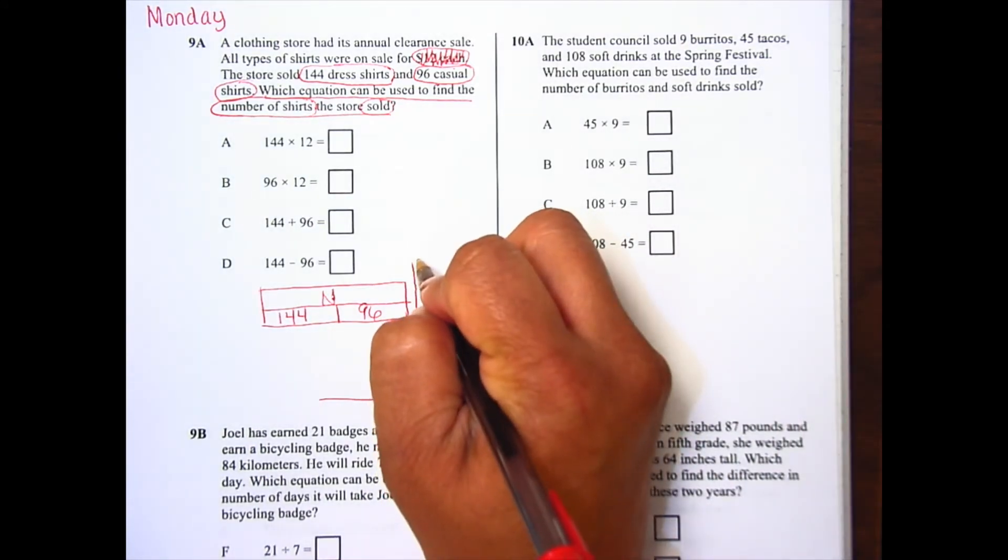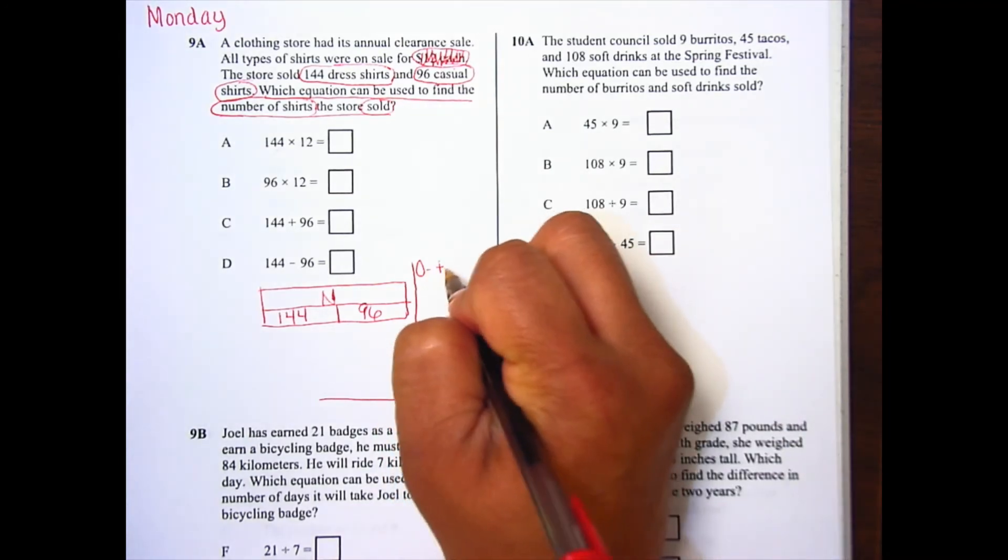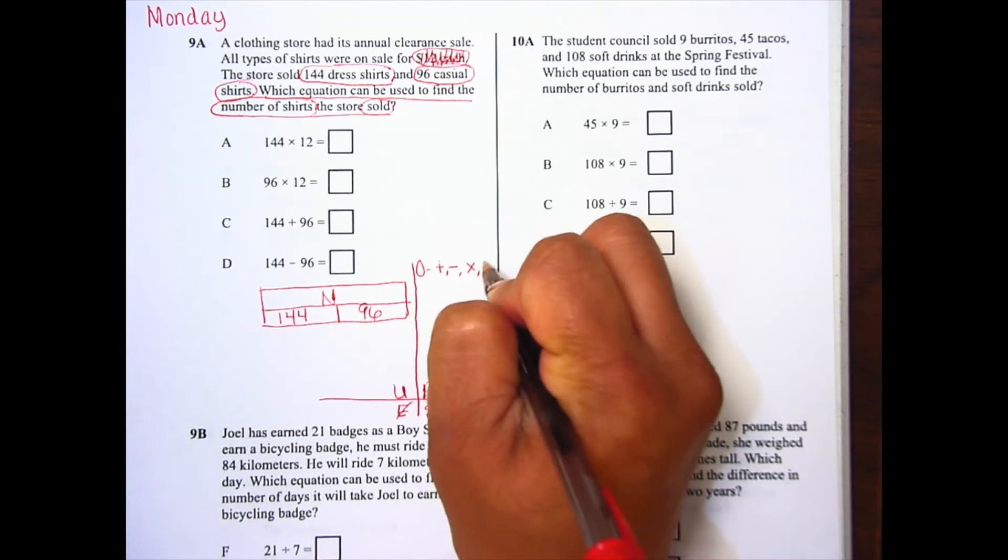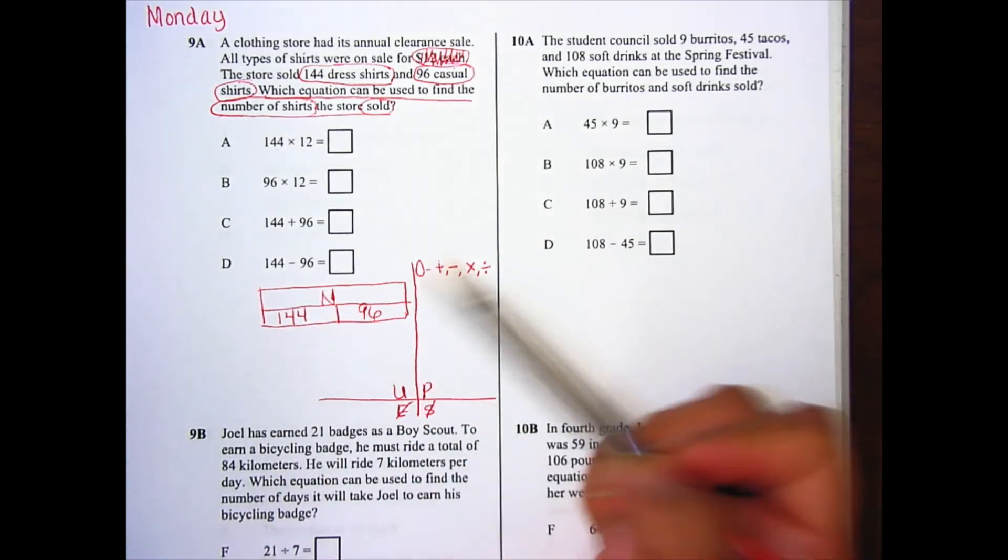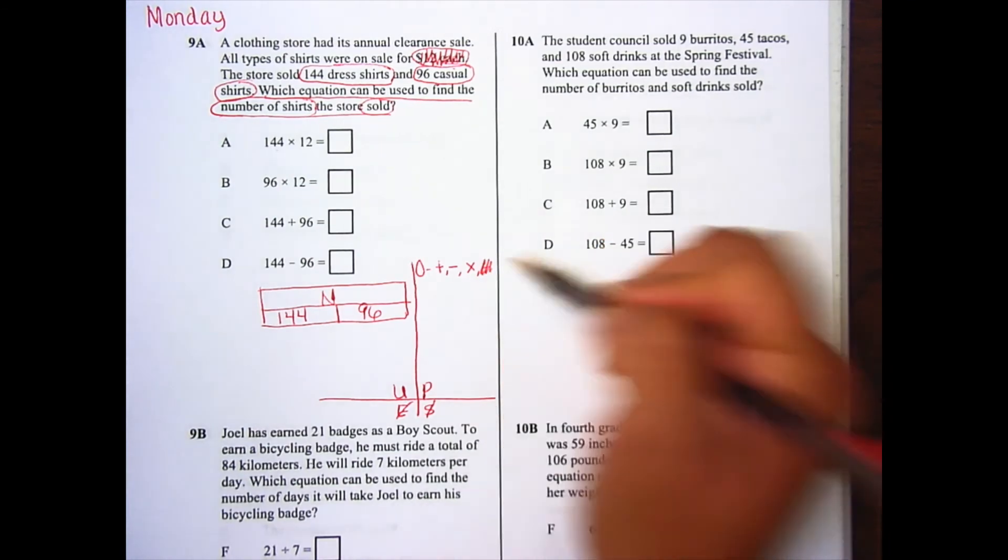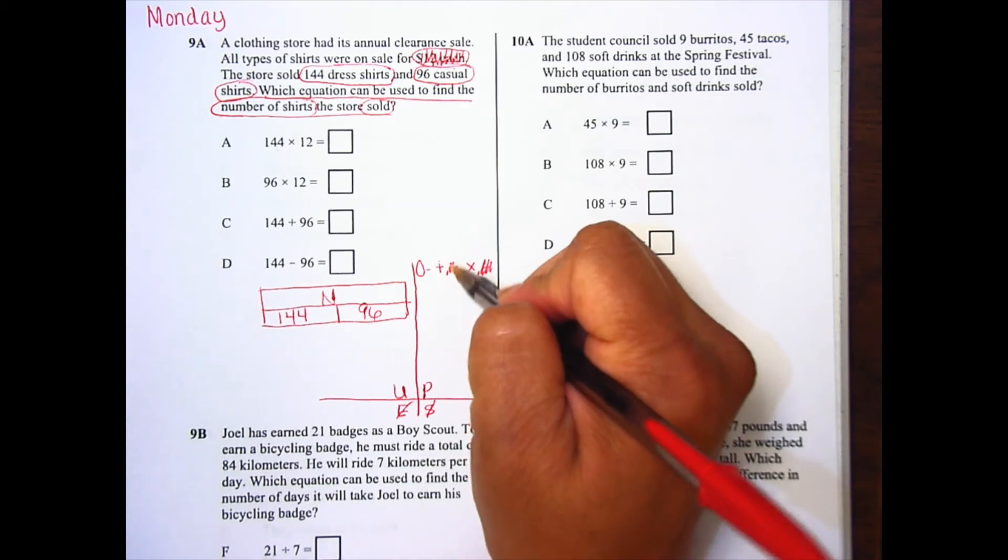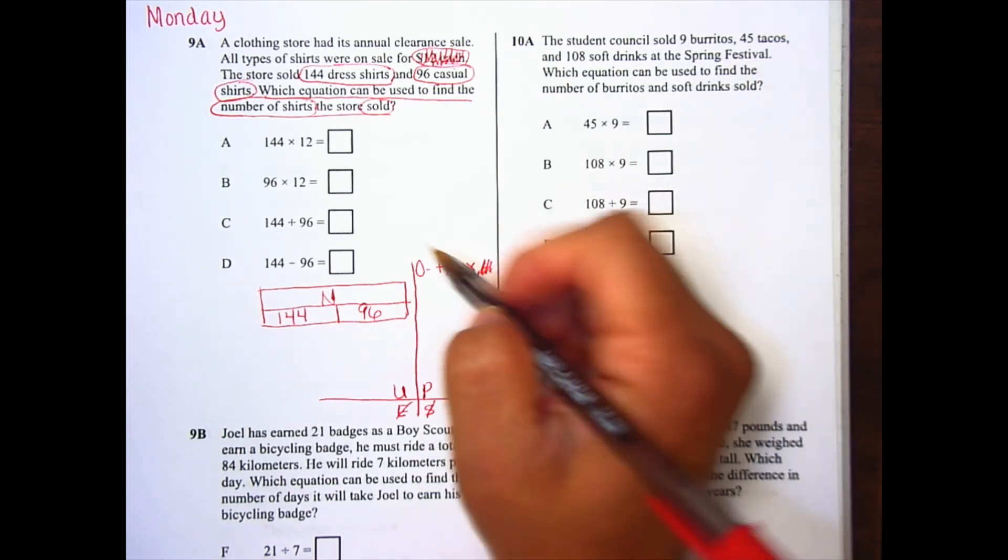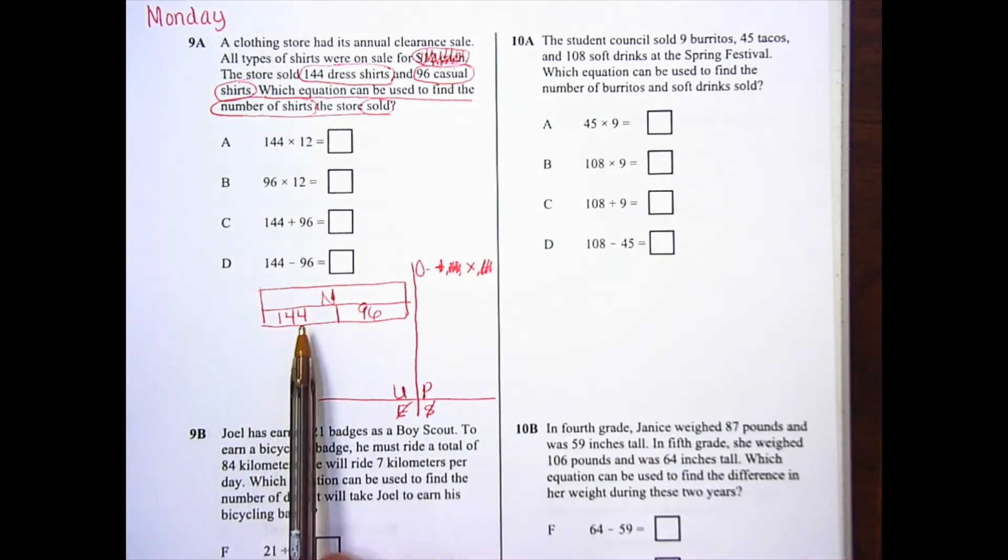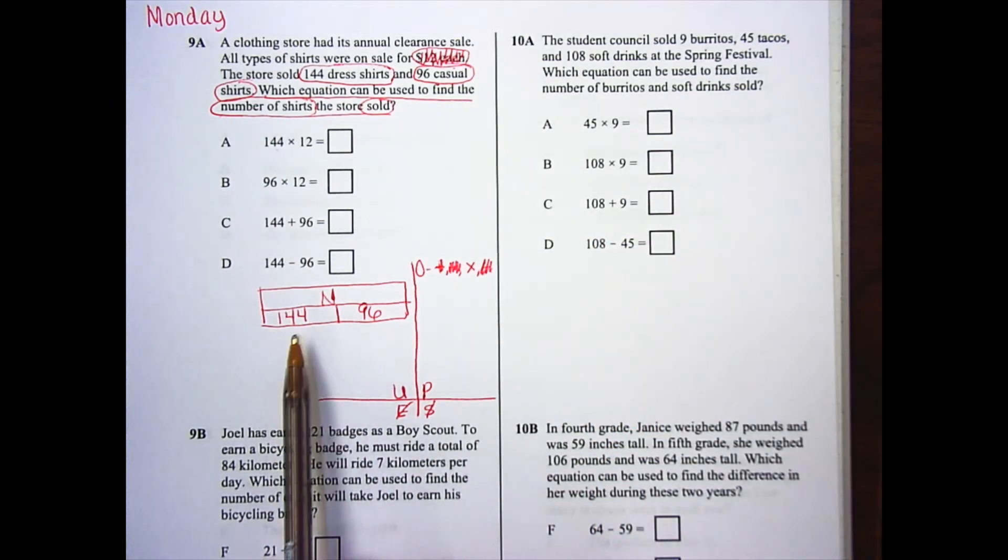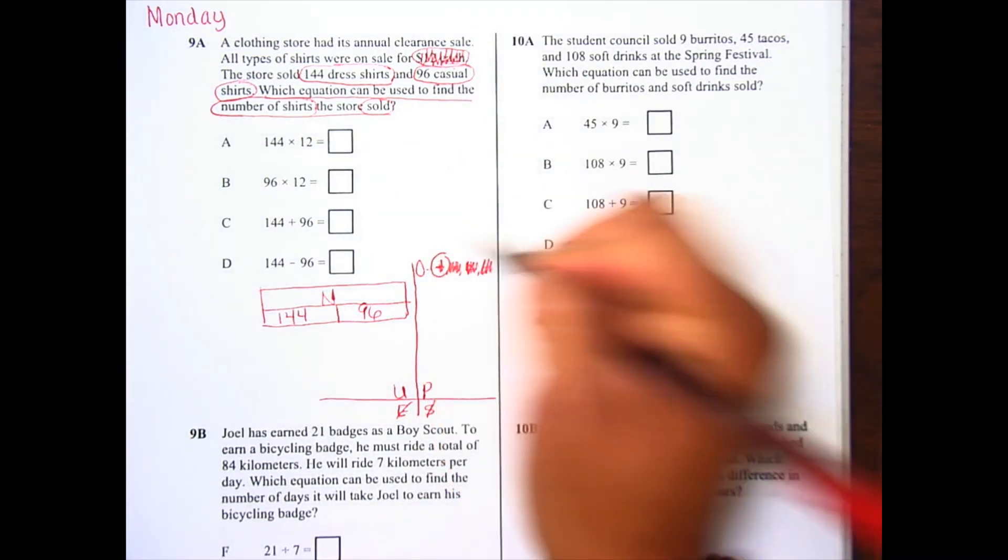So my operation, the O is for operation. Am I adding, subtracting, multiplying, or dividing? Well, I don't have a whole. So I'm not dividing. This one's out. So I don't have a whole. So subtraction is out. So my two options are addition or multiplication. But all I have is two parts. I don't have any repeating numbers. I don't have any groups of. So I know I'm not multiplying. I am adding.